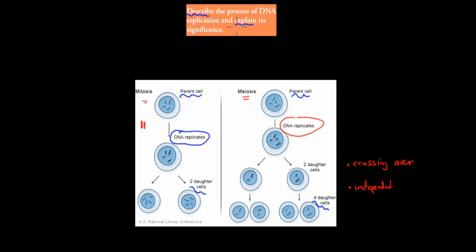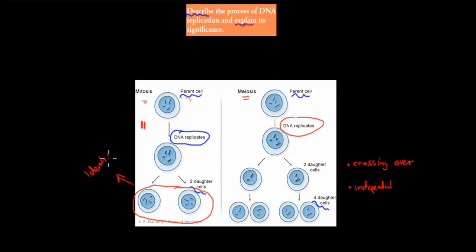Back to the significance. Without DNA replication we wouldn't be able to produce our daughter cells. Mitosis happens in our body on a daily basis — this is how we replace our body cells. We go from one parent cell to two identical daughter cells with the same copies of DNA, and the only way we can make that happen is if we can actually replicate our DNA.